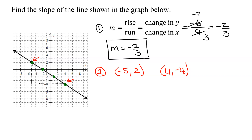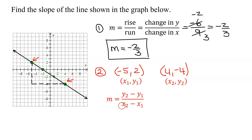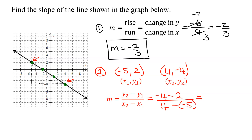I'm going to take the first point and call that x1, y1. My second point is x2, y2. And then using my slope formula: m is y2 minus y1 over x2 minus x1. Just plugging the numbers in — y2 is negative 4, minus y1 which is 2, all divided by x2 which is 4, minus x1 which is negative 5. So negative 4 minus 2 is negative 6, divided by 4 minus negative 5, which is plus 5 — so I get negative 6 over 9. Is that what I got before? Yes. So my slope is negative 2 thirds.